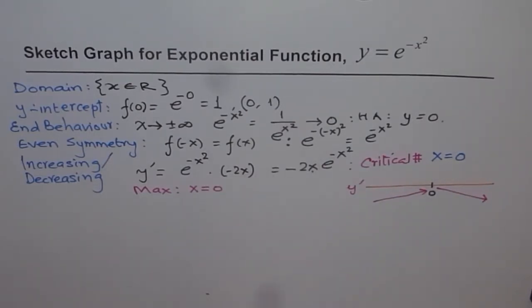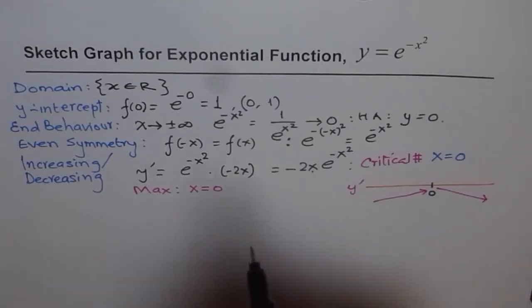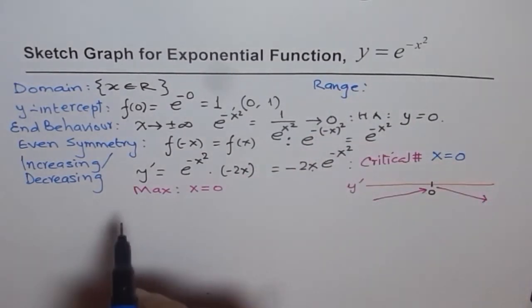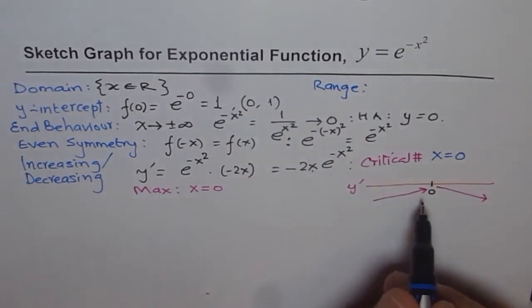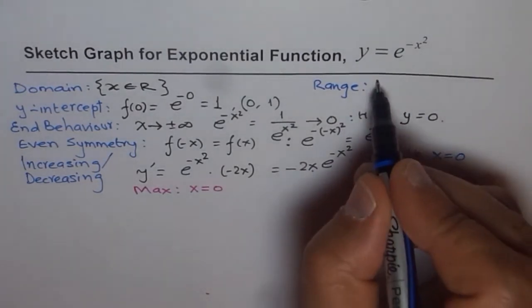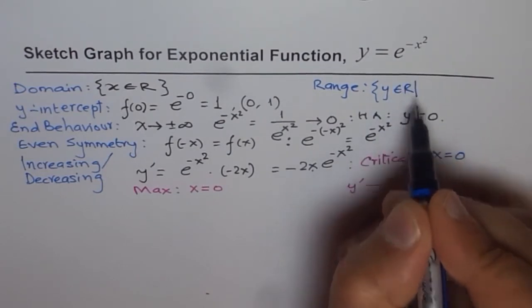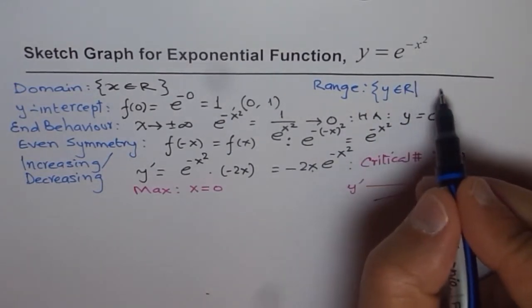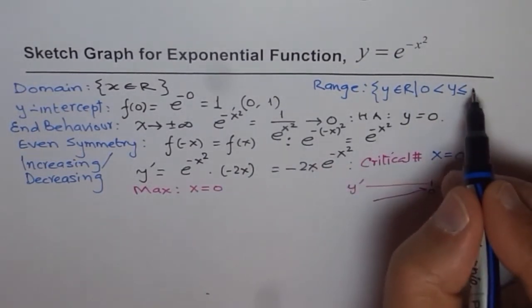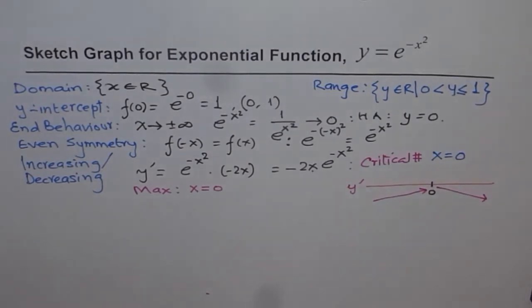From this analysis we can write the range of the function. Since we have found the maximum value of 1, and we know the minimum is approaching zero from the positive side, the range is y belongs to real numbers such that y is greater than zero and less than or equal to one.